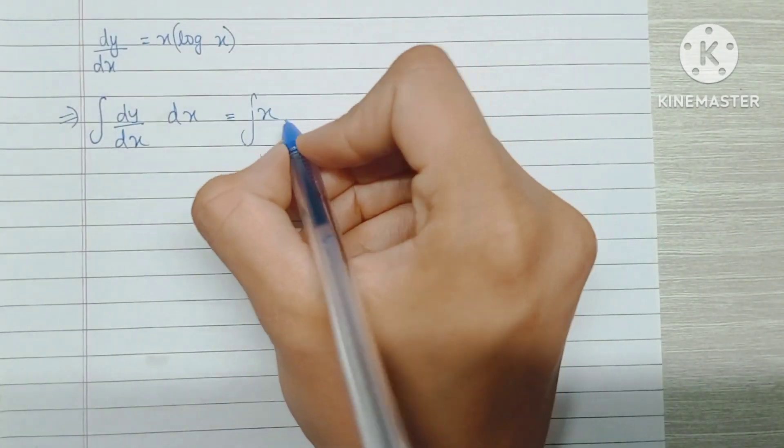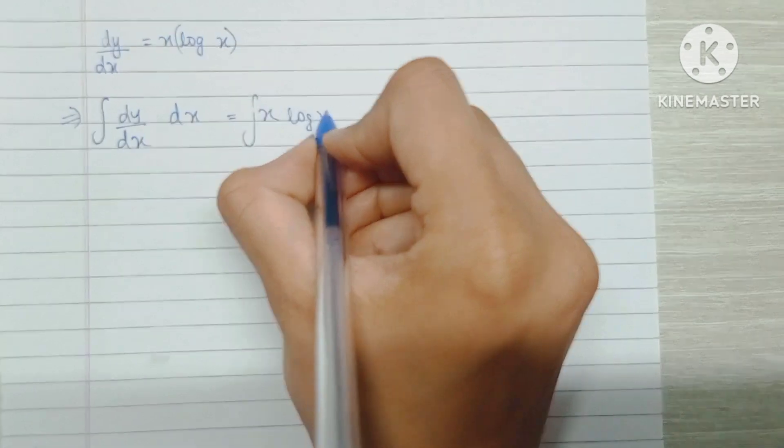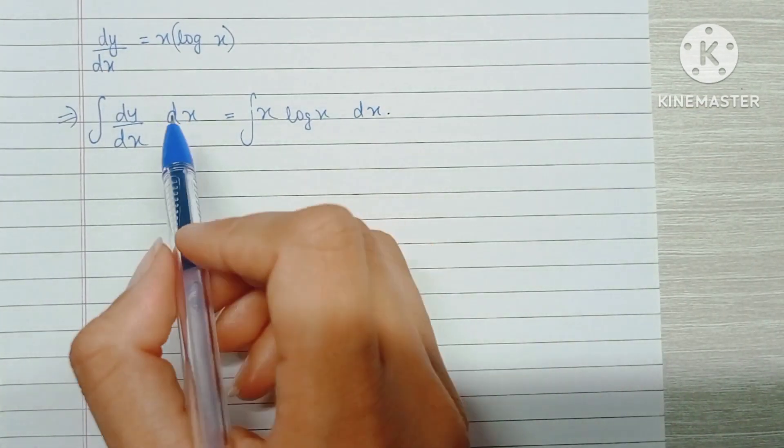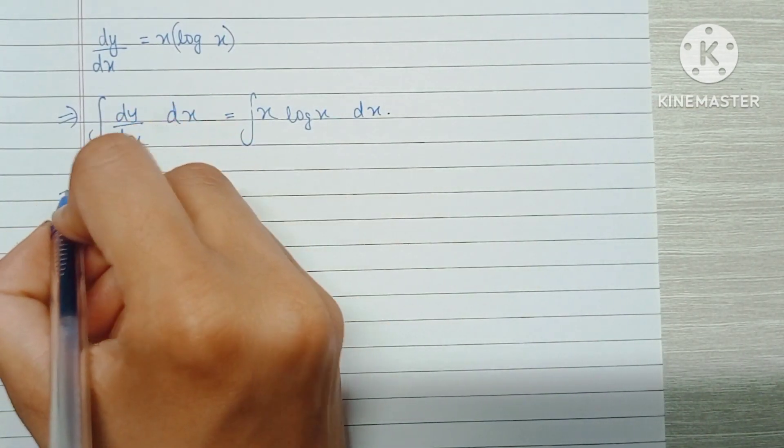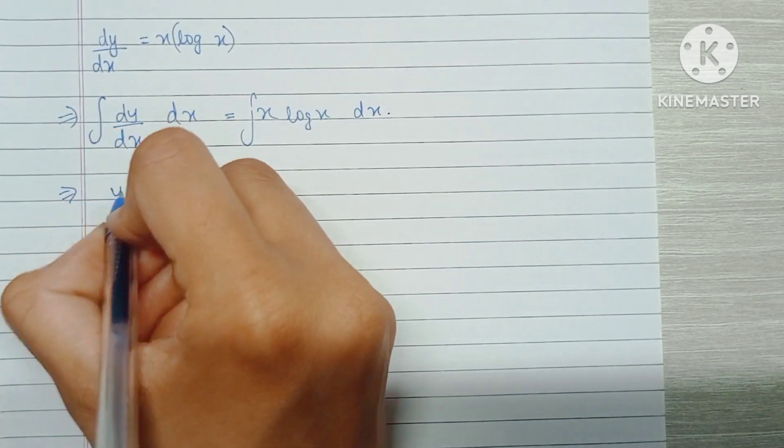So we have the integration of x log x dx. Automatically this left side becomes y, so the first part has been accomplished.